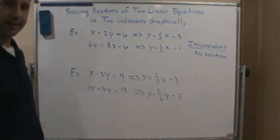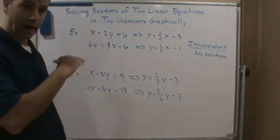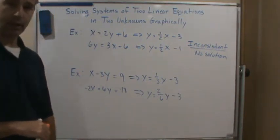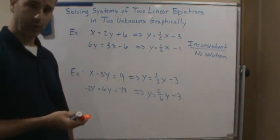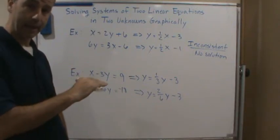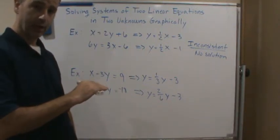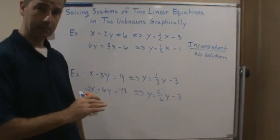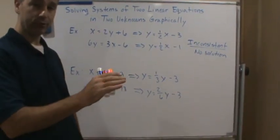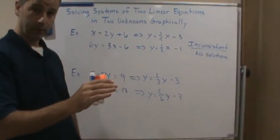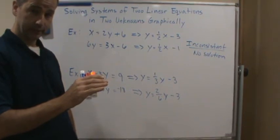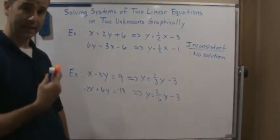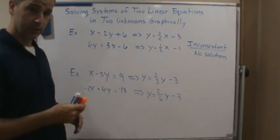Having the same slope and the same intercept tells us that not only are they rising at the same rate, but they also intersect at the exact same point, which means the lines are right on top of each other. Both of these equations represent the same line, so they intersect everywhere — at all points on both lines. That means this system has an infinite number of solutions.